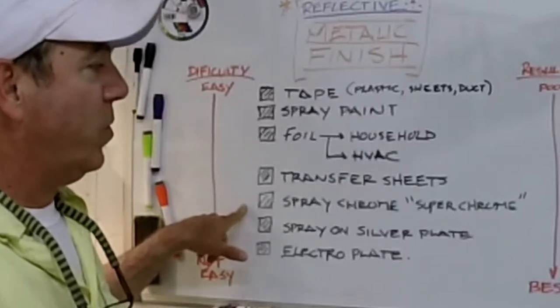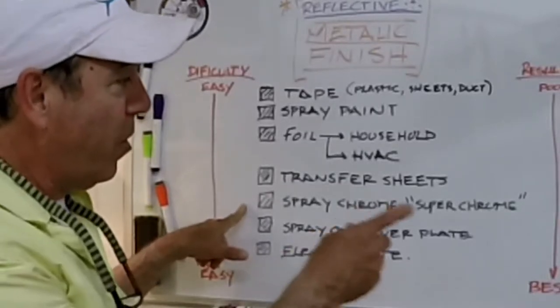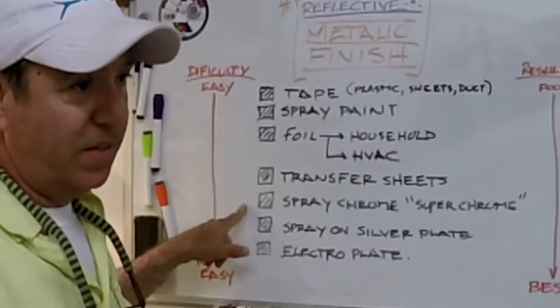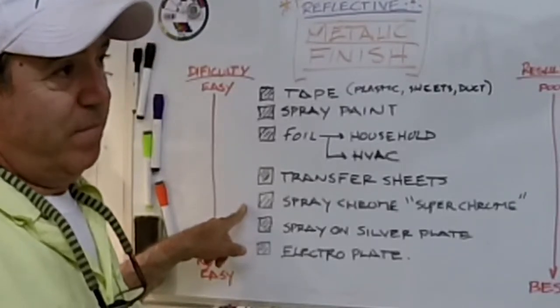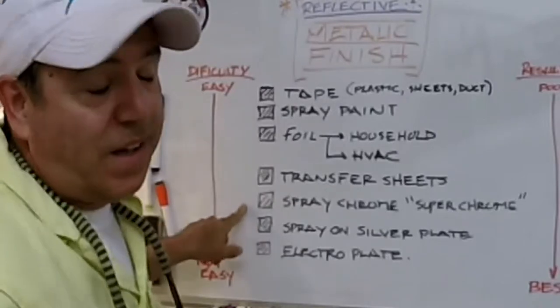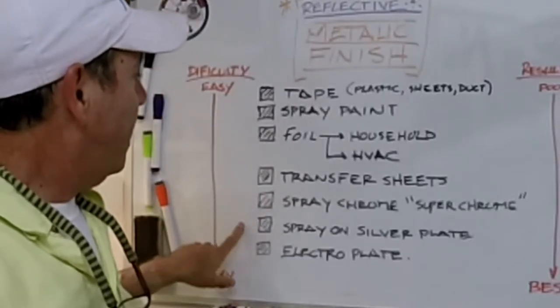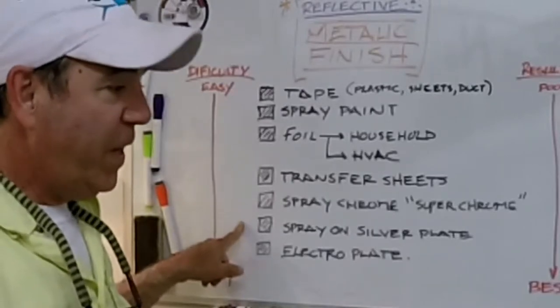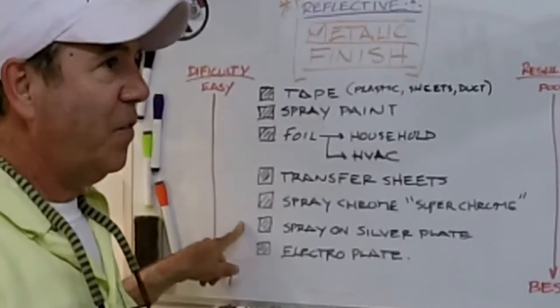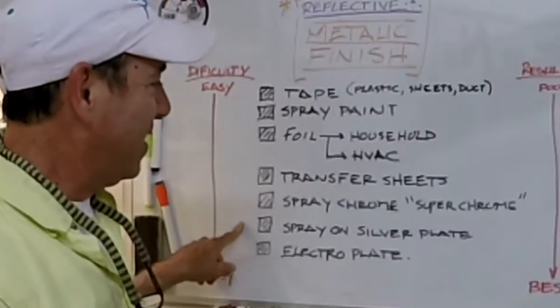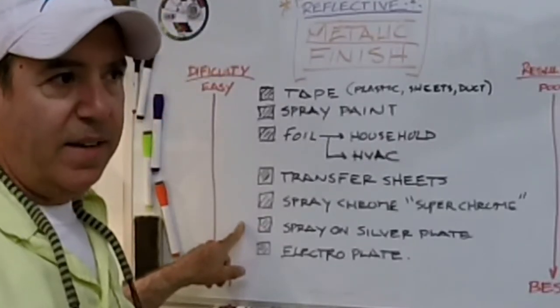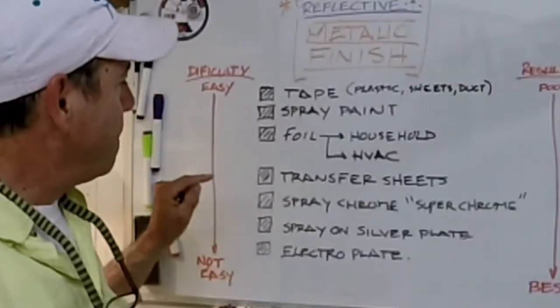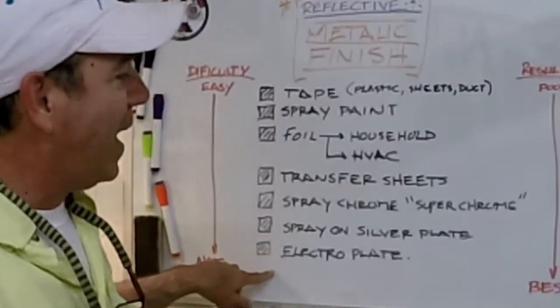Spray-on chrome, which is super chrome stuff - I've used it, I bought the whole kit, spent hundreds of dollars to use it, mediocre - you guys decide. Spray-on silver plate, probably the best finish you can get if you can get it. It's a little hard to put on, it's complicated, and protecting the surface is a little bit complicated as well.